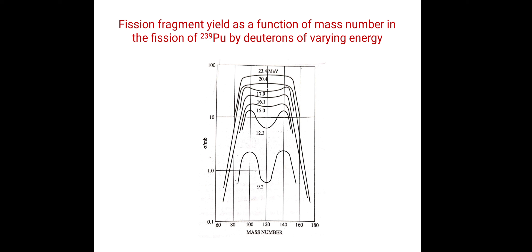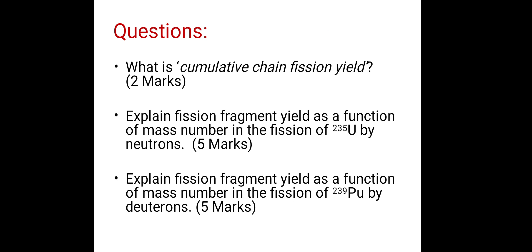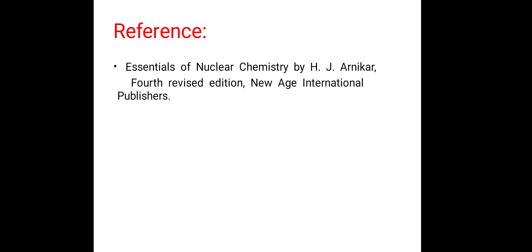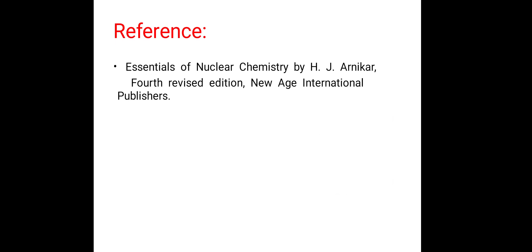This is all about fission yield. Some questions to consider: What is cumulative chain fission yield? Explain fission fragment yield as a function of mass number in the fission of uranium-235 by neutrons, and similarly for plutonium-239. Thank you.